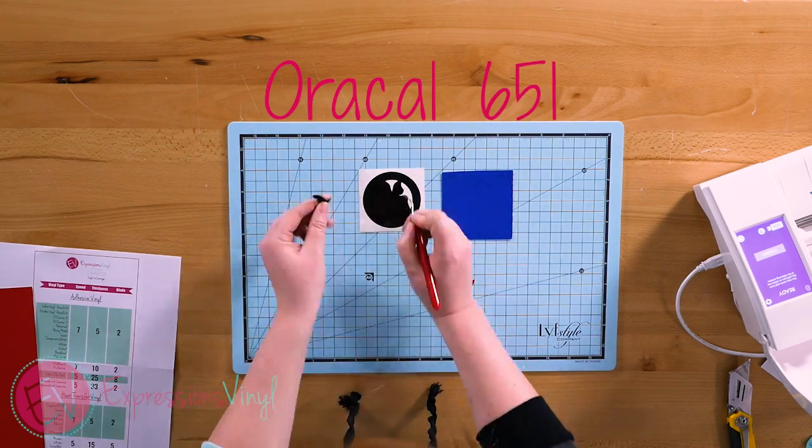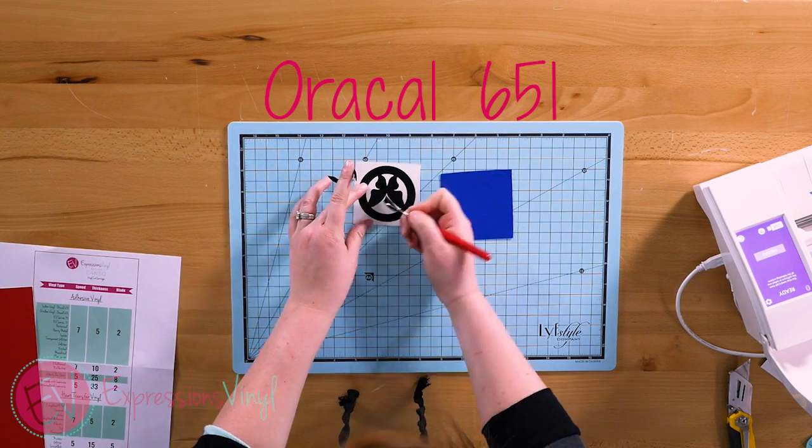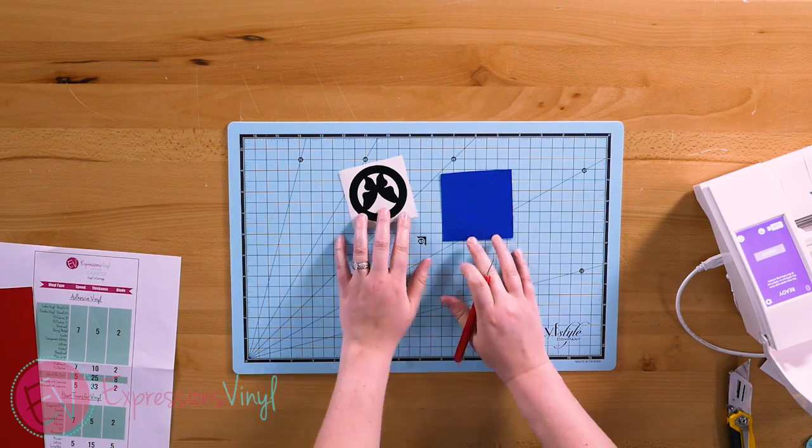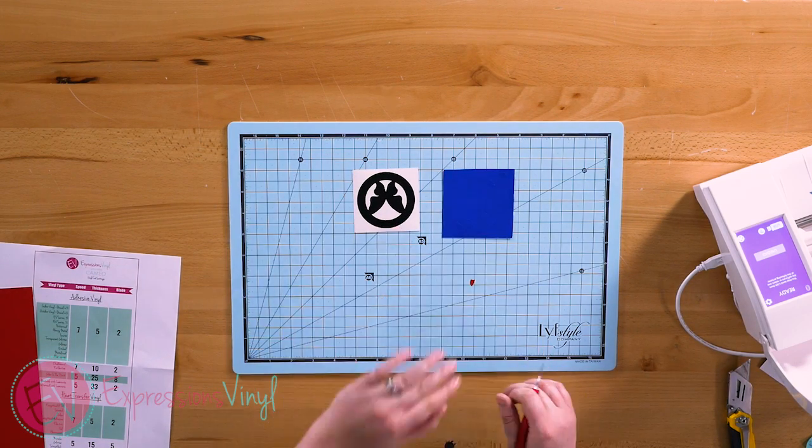So let's see how the 651 does. It's not too bad. It's actually a pretty good cut for just regular. This will vary from machine to machine, so that's not bad though.